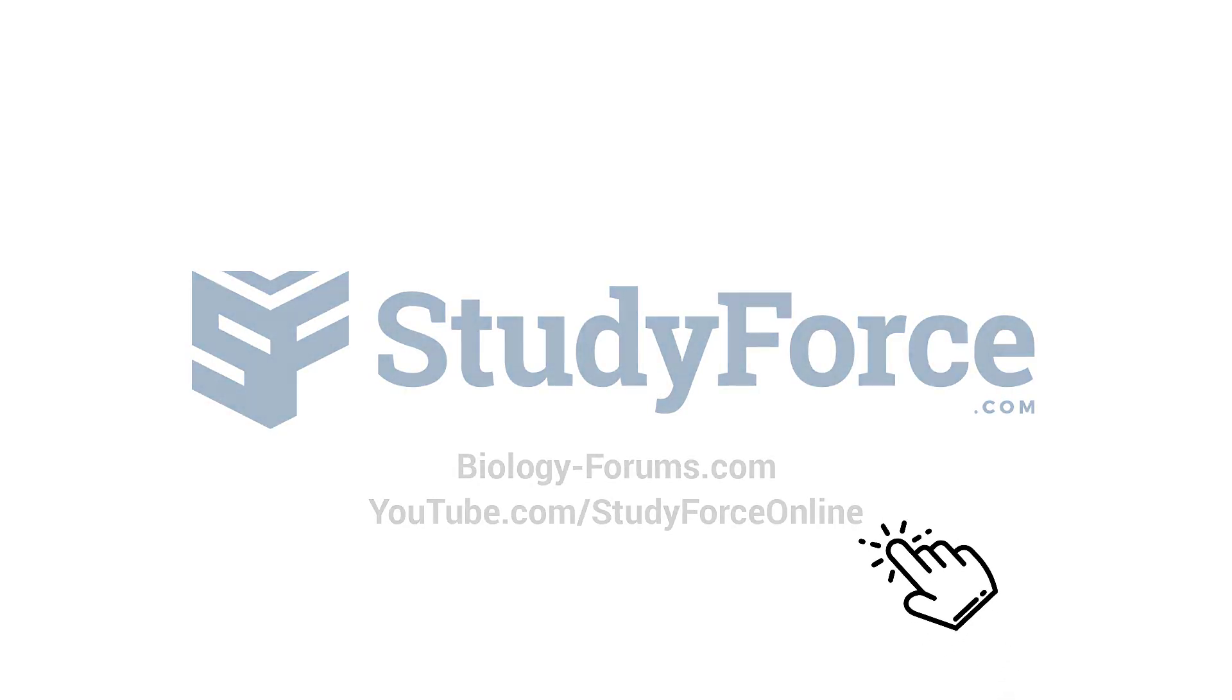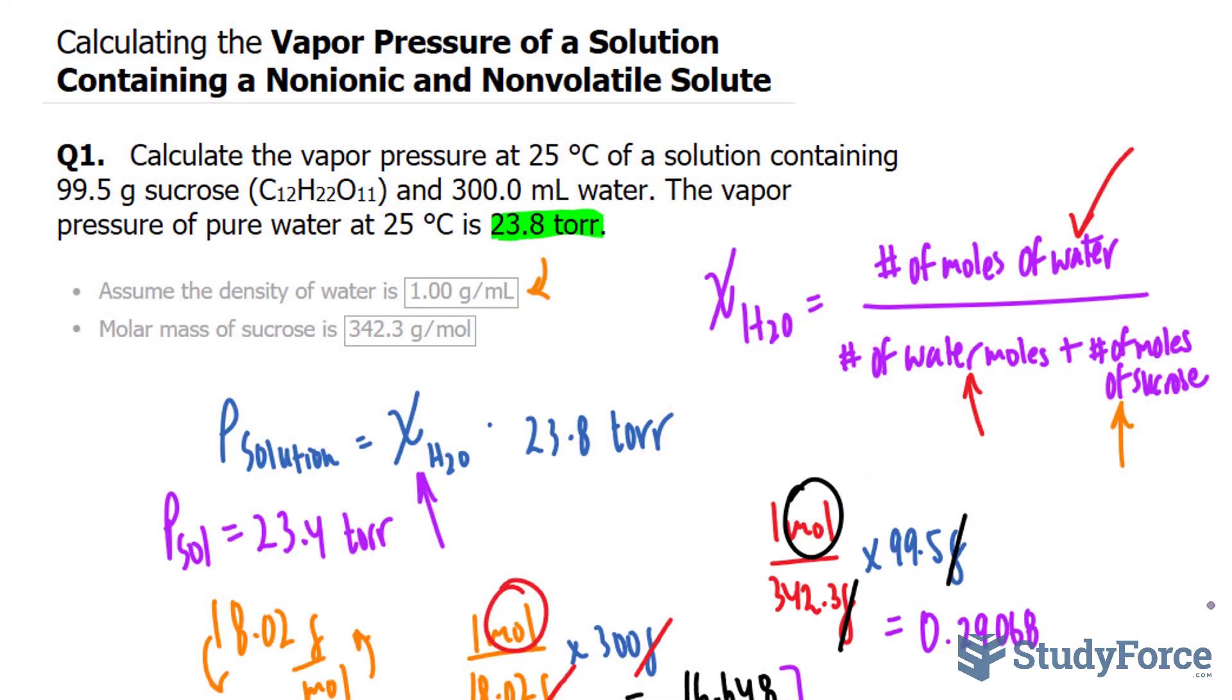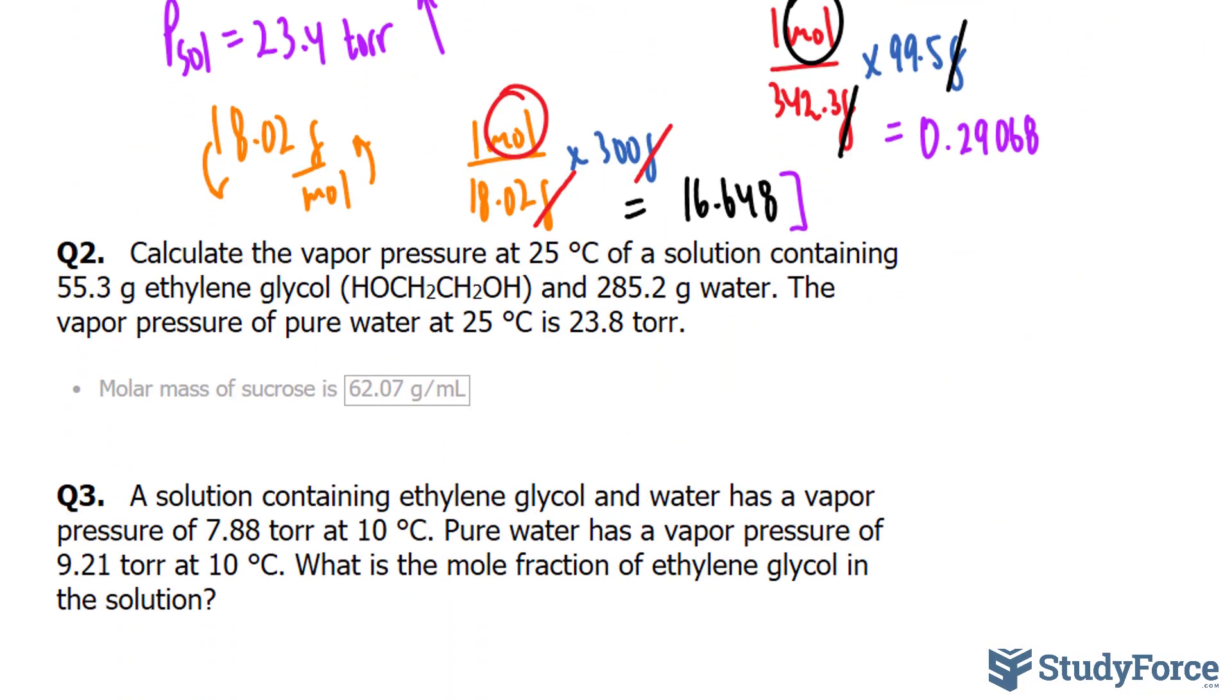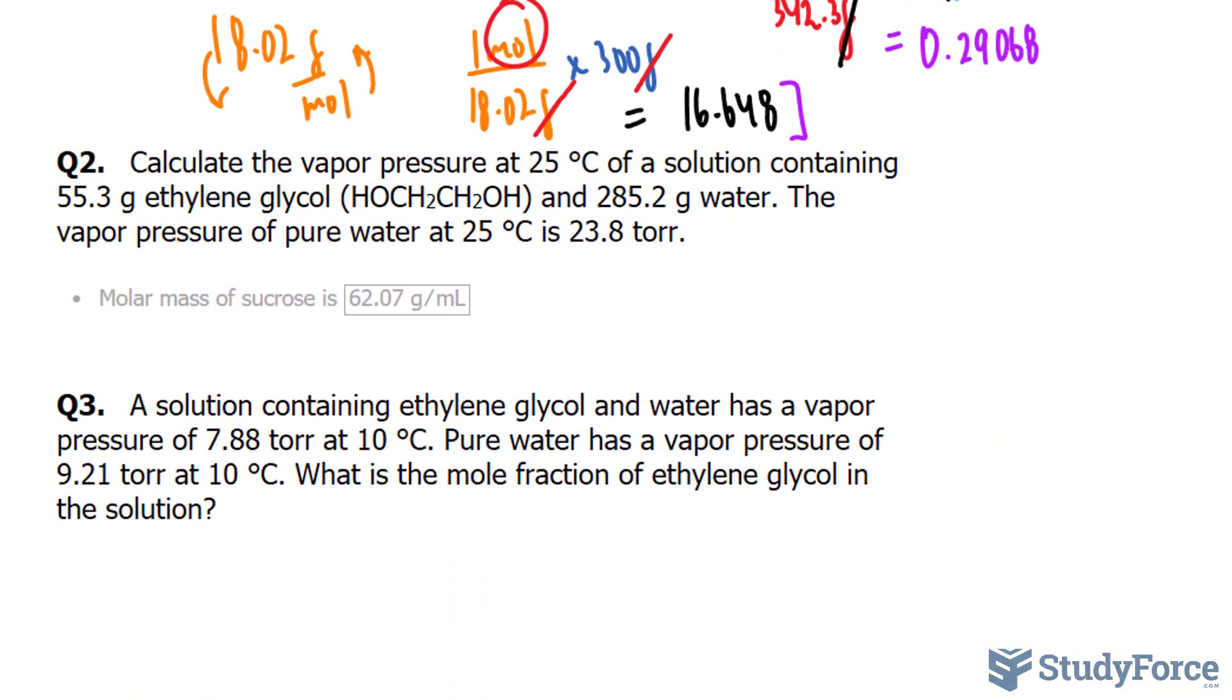Welcome back to part two of this series where we calculate the vapor pressure of a solution containing a nonionic and nonvolatile solute. The solute that we used in question one was sucrose, and in question two we have ethylene glycol.